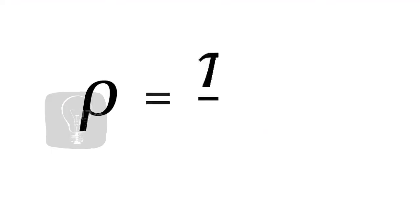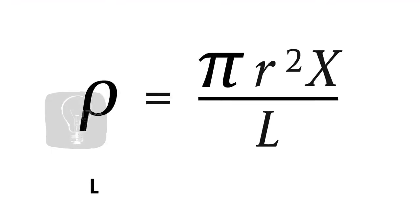If L be the length of the wire, then the specific resistance of the material of the wire is calculated using the formula rho equals pi r squared X divided by L.